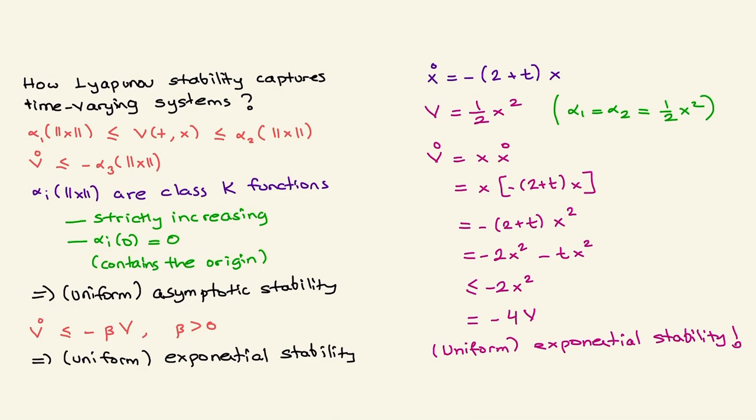So the key point: don't use eigenvalues for linear time-varying systems. Use their solutions, or as I showed, Lyapunov stability theory nicely generalizes to linear time-varying systems.